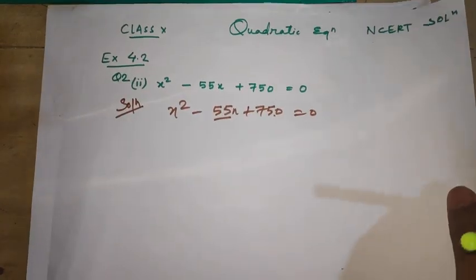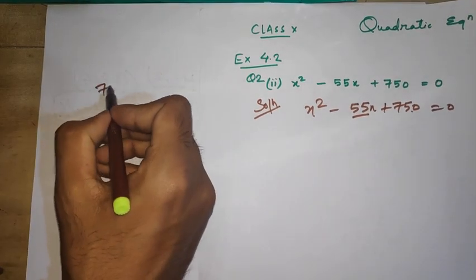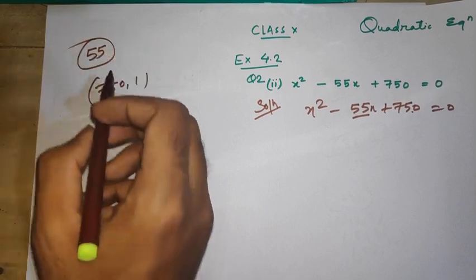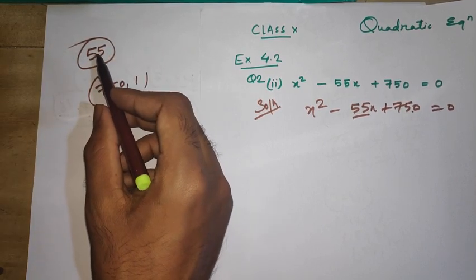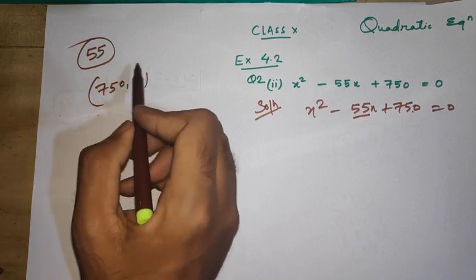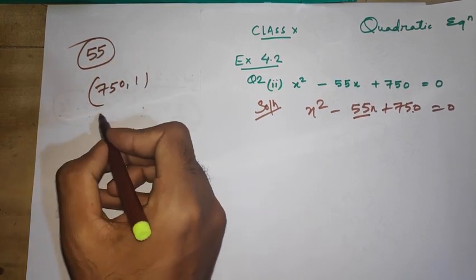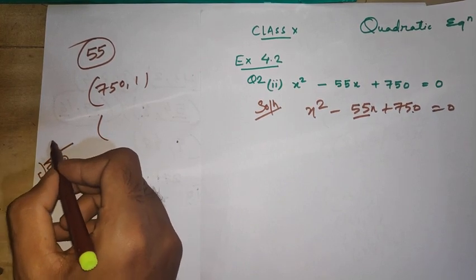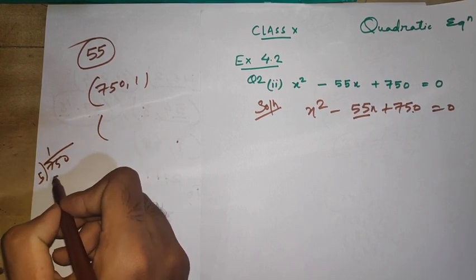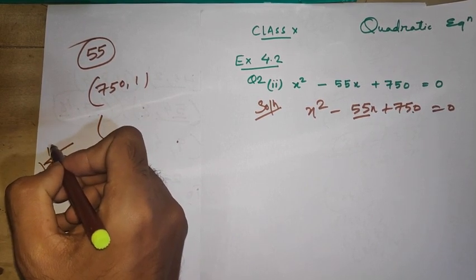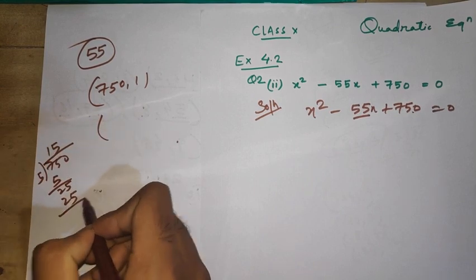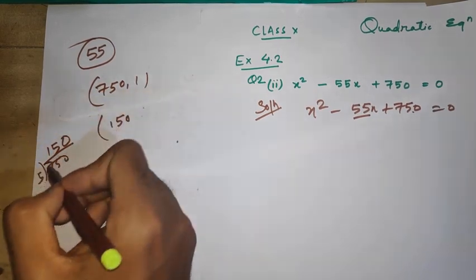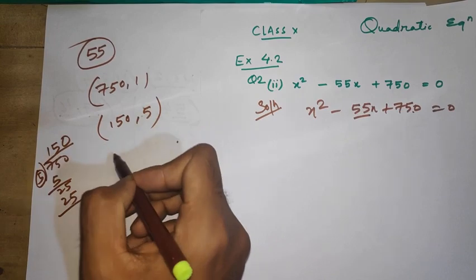What we're going to do is factor 750. We need 55 in the middle term. Since 55 is divisible by 5, I'm going to divide by 5 only. 750 divided by 5 is 150, then 150 divided by 5 is 30, and 5 times 5 is 25.